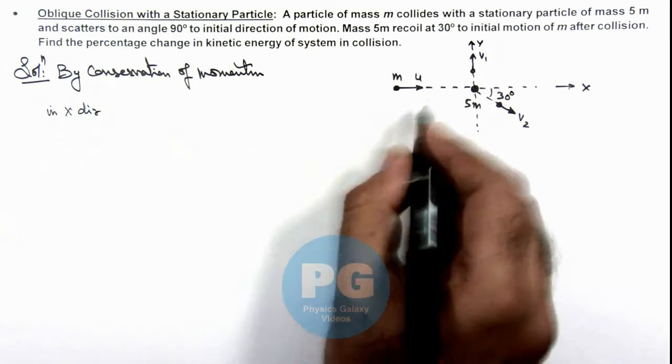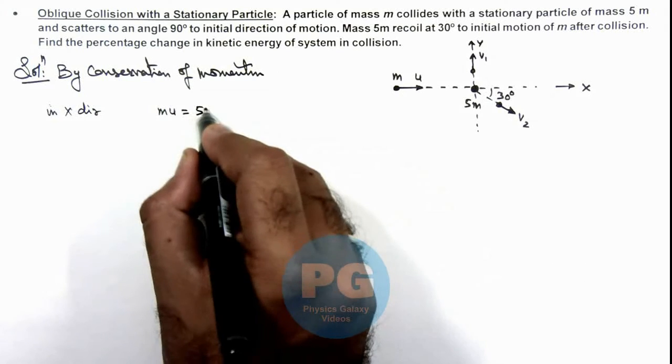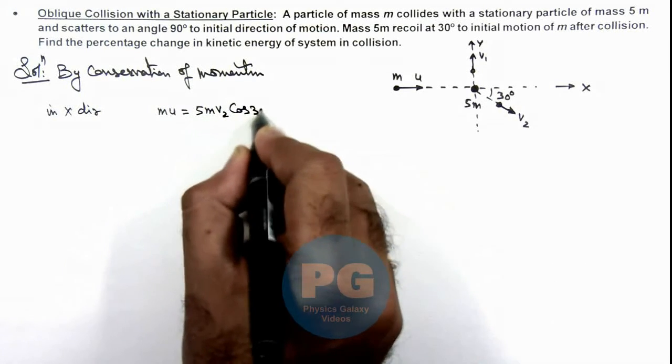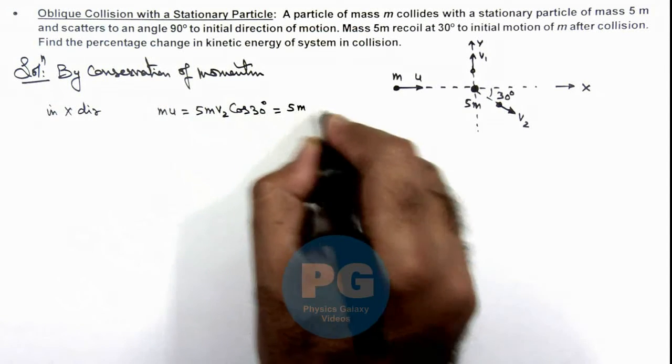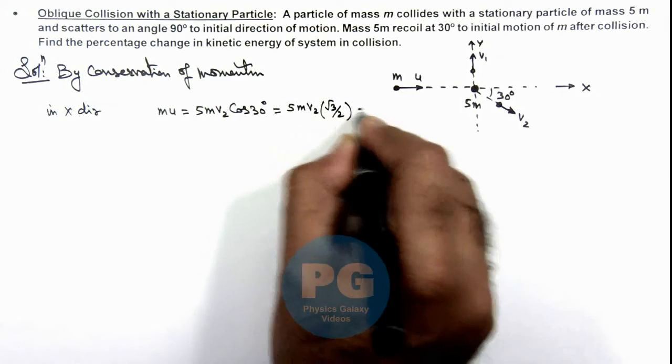The initial momentum was m·u and after collision the momentum would be 5m·v2·cos(30°), and that is equal to 5m·v2·(√3/2). Say this is our first equation.